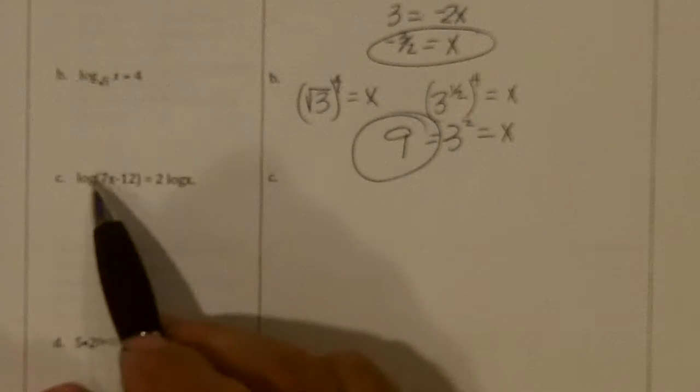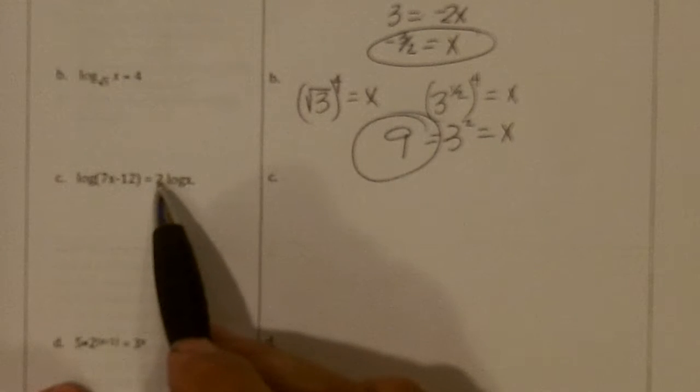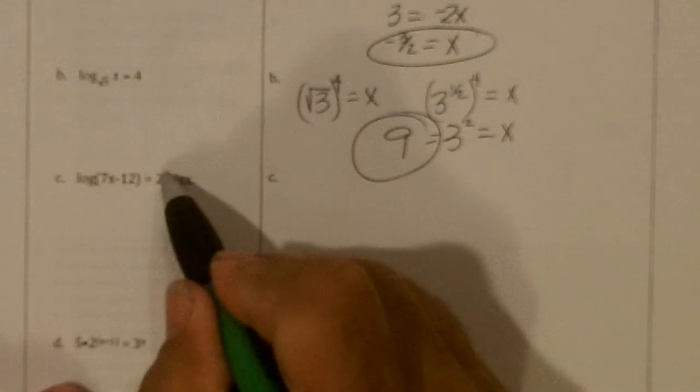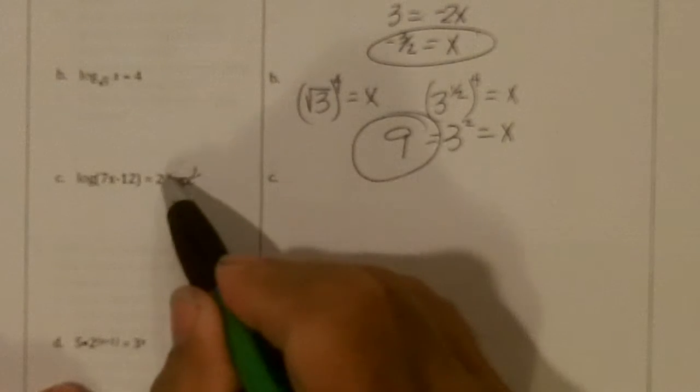All right, we've got logs on both sides, so if we can get this so it's a single log, not 2 times. So we move the 2 up and we get x squared over here.